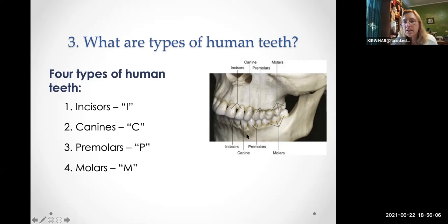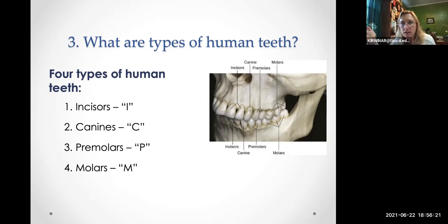Each half of the top and bottom is called a quadrant because four quadrants make a whole — four quarters make a dollar. We assign a code to each type of tooth looking at only one quadrant of the entire mouth.